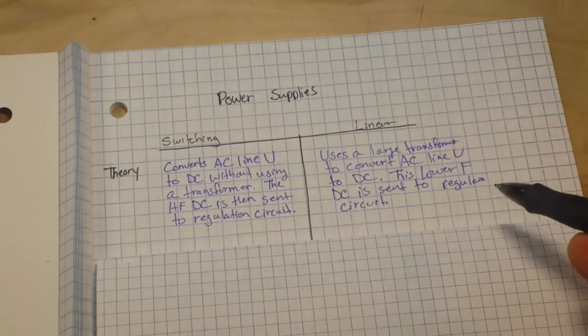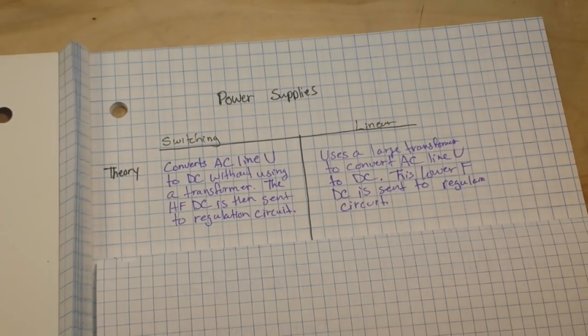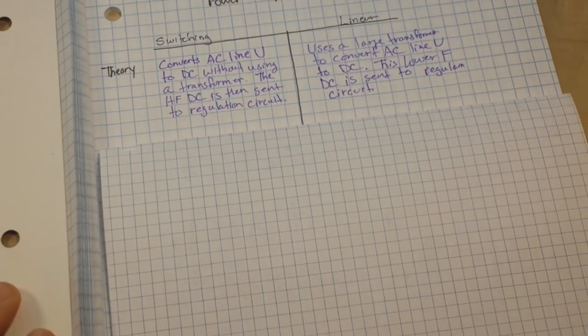Now your linear power supply, on the other hand, uses a big old transformer to convert the AC line voltage to DC, which is up to twice as high in frequency as the input. If we're using full-wave rectification, you have a frequency twice that of the input. Now this lower-frequency DC is then sent to the regulation circuit, so it's much simpler.